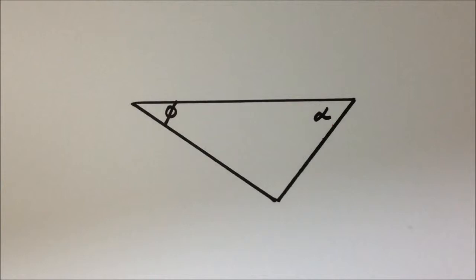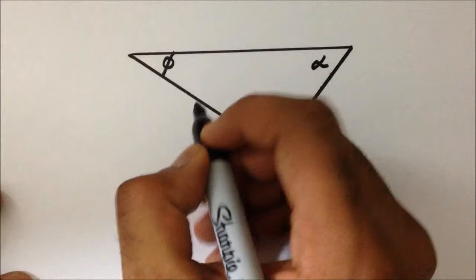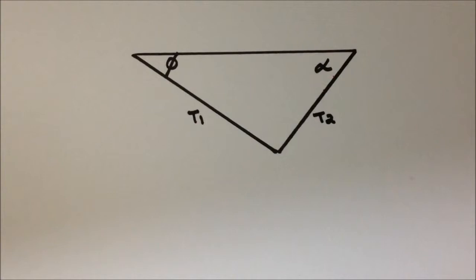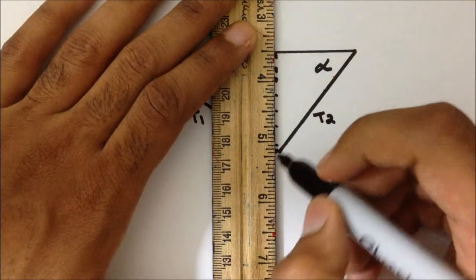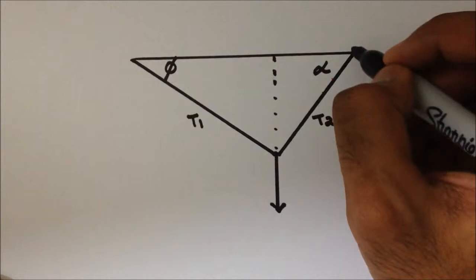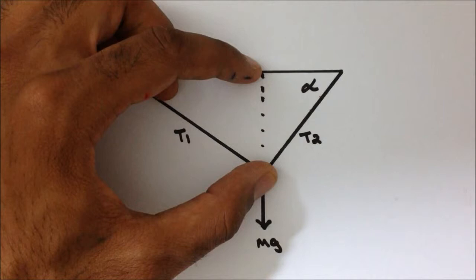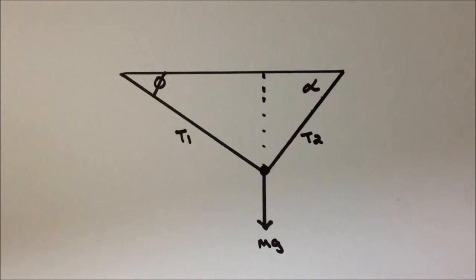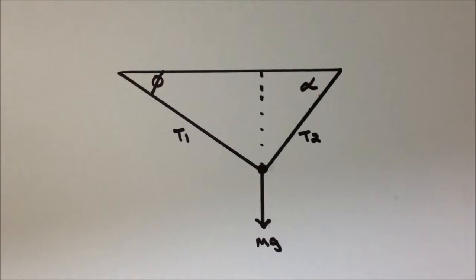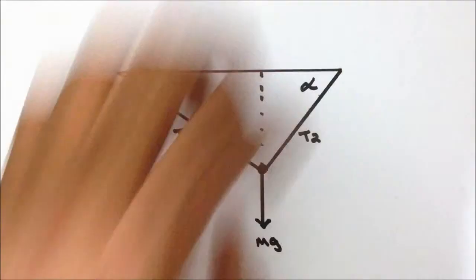I'm going to label this tension T1 and this one tension T2. I'm going to draw a dotted line here. We have a weight vector — this is the weight component of the police officer. Using this dotted line, I constructed two right triangles with hypotenuse T1 on the left side and T2 on the right side. Our goal is to decompose vector T1 and vector T2 into their horizontal and vertical components.